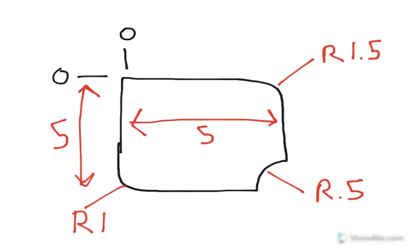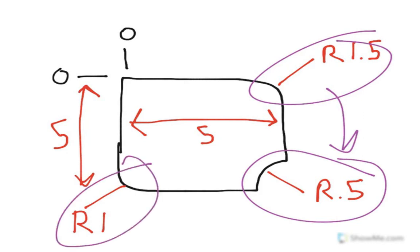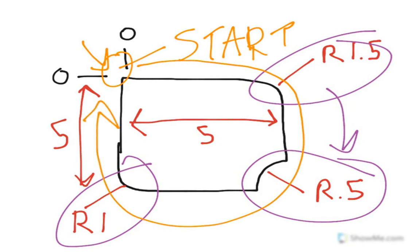Let's go ahead and take a look at the part that we're going to be working on — this is what we're going to try and create. It's going to be a 5x5 block. All these dimensions are in inches. We have a radius of 1.5 on the top right-hand corner, then moving down a dimension of 0.5, another dimension of 1 for the radius, and then finally the last portion of 5 inches. We're going to start at this location and move all the way around in a clockwise fashion.